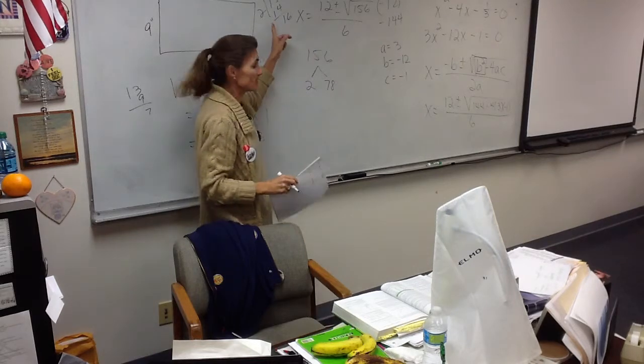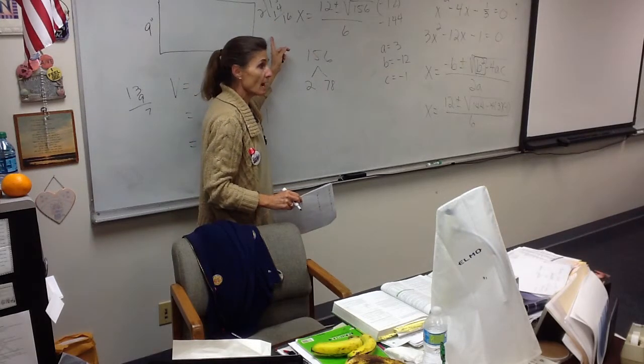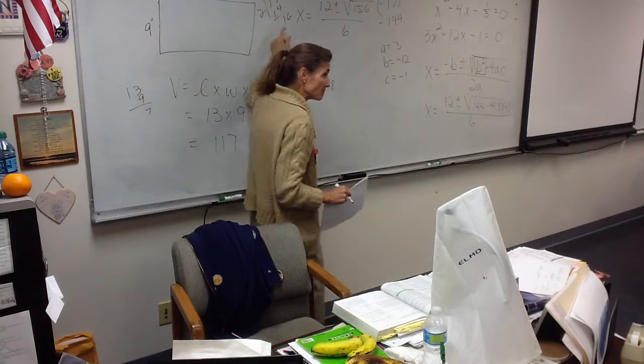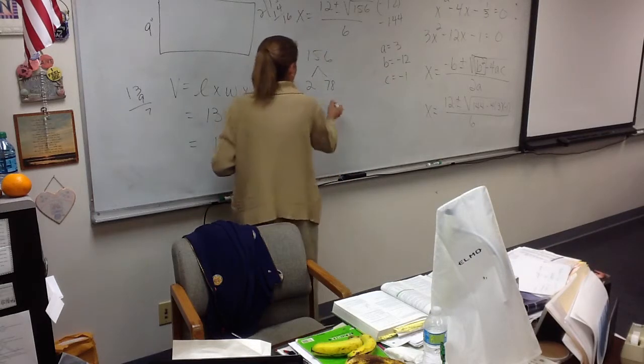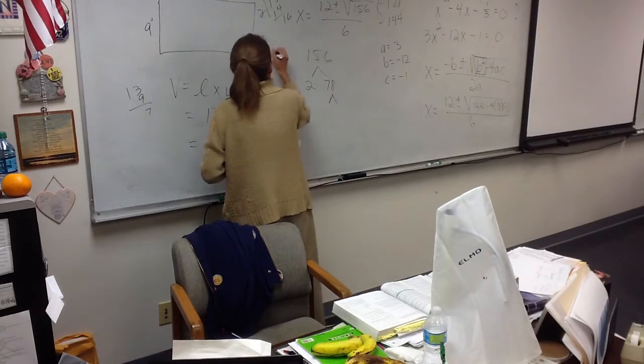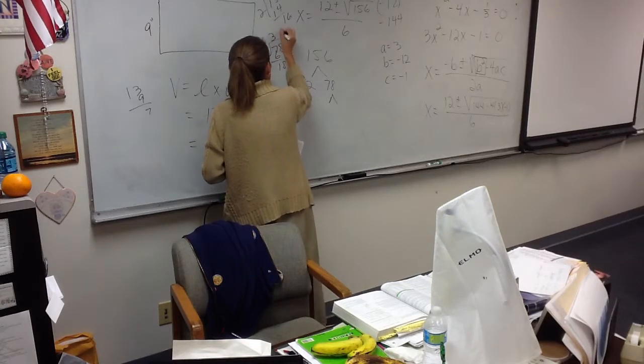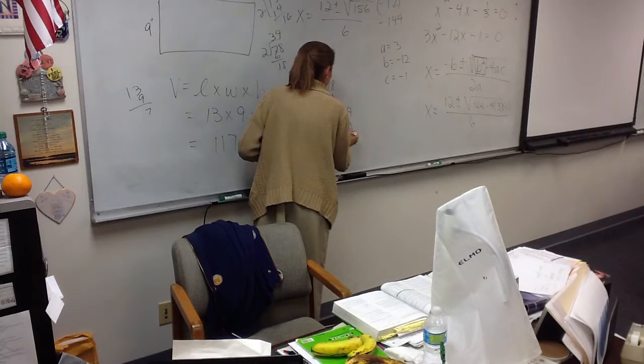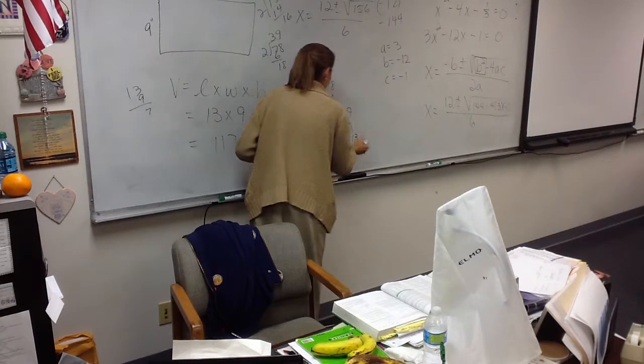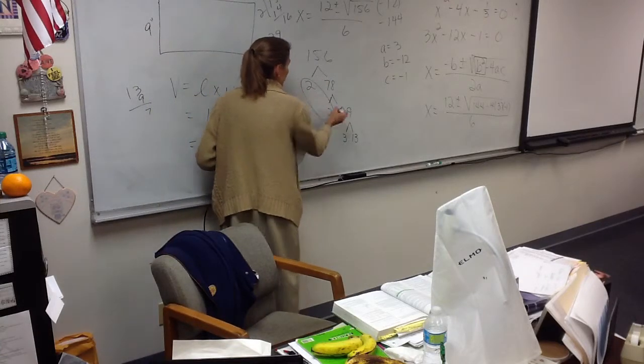So two goes into it. See how I do my figuring over to the side? And I'm old, and I'm the teacher, and I'm still having to do figuring, right? That's what we do. We write it down. Okay. So now I can take 2 into 78. And 39 is what? 3 times 13? So I've got a couple of 2s, right?